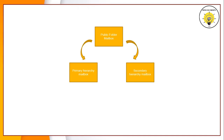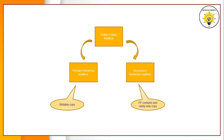Public folders hierarchy is the logical structure in which the permissions and the properties of public folders are arranged. Before we create a public folder, we need to create a public folder mailbox. Public folder mailboxes are of two types: primary hierarchy mailbox and secondary hierarchy mailbox. The primary hierarchy mailbox is the writable copy of the public folder hierarchy, and the secondary hierarchy mailbox contains public folder contents and the read-only copy of the public folder hierarchy.